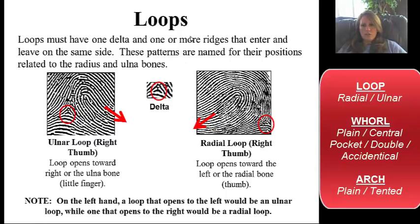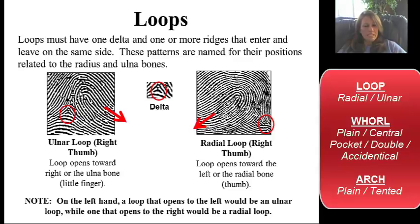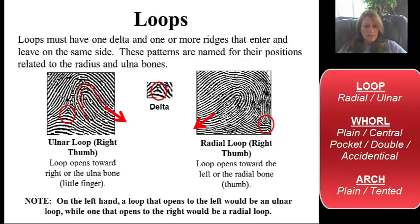Let's start with loops, which is the most commonly found type of print. There's ulnar and radial. The ulnar refers to the bone in your arm — the ulna is on the pinky side. It's really important to know whether we're looking at the left or the right hand, because that will dictate whether it's ulnar or radial. The definition of a loop is the open end of the loop — the open end is pointing toward whatever bone it is. If it's pointing toward the little finger on the right hand, then that's an ulnar loop.